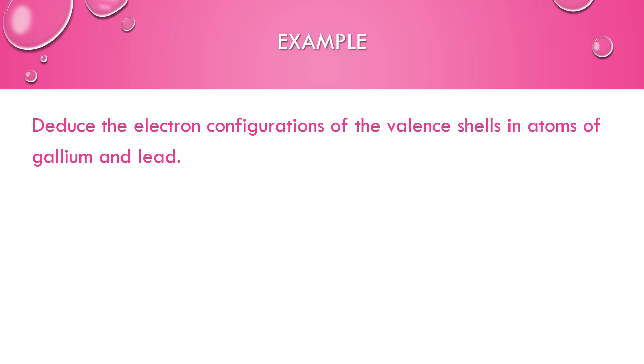This example wants us to find the electron configurations of the valence shell in atoms of gallium and lead. Gallium is number 31 on the periodic table, so you should be able to write the whole electron configuration for sure. But it just wants the valence electrons. The noble gas that comes before gallium is argon, and argon has 18 electrons. After argon comes that 4s sub-level, then you would have 3d completely filled, and then the 4p would just have one electron to get us to 31. You could focus on just the 3 valence electrons, 4s2, 4p1, and that should answer the question properly.